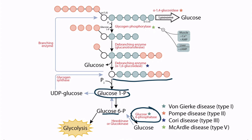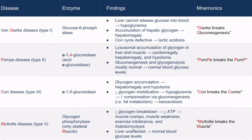A deficiency of glucose-6-phosphatase results in von Gierke disease, also known as glycogen storage disease type 1. Von Gierke disease results in a decreased ability of the liver to release glucose into the blood, which can cause severe hypoglycemia. The final step in both glycogenolysis and gluconeogenesis is defective. As metabolites accumulate in the liver, this results in hepatomegaly. The Cori cycle is also defective, which results in a lactic acidosis.